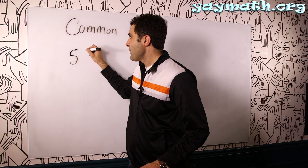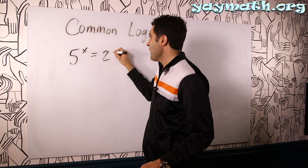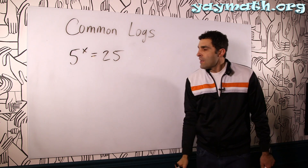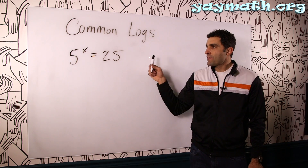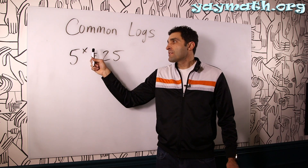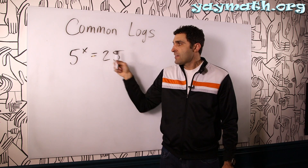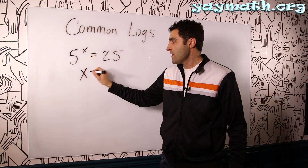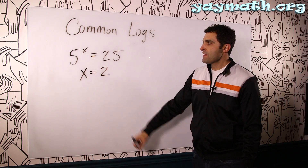Let's say 5 to the x equals 25. With this type of problem, we can solve it because we know that 5 to something does equal 25, and x is none other than 2. So that works, that's great.